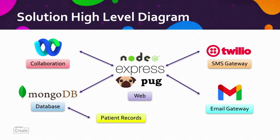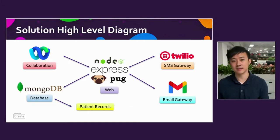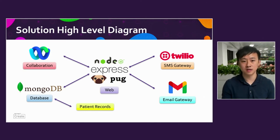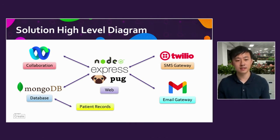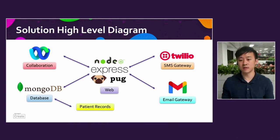This is our solution's high-level diagram. In the middle is our web engine, which bridges every component of the solution. We use Express.js as the web framework and a template engine. We use WebEx for all the collaboration and video conferencing capabilities, and we also use Twilio and email as SMS and email gateways respectively. We have a database in MongoDB, and importantly we integrate with patient records — referred to as PMR or EHR, patient management record or electronic health record — which contain the patient's name, medical identifier, and contact information.